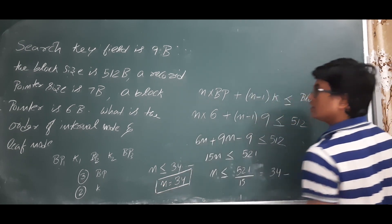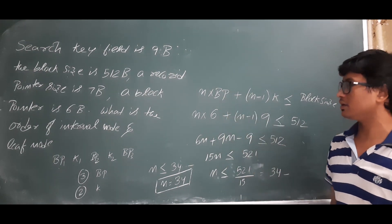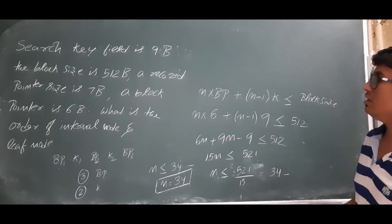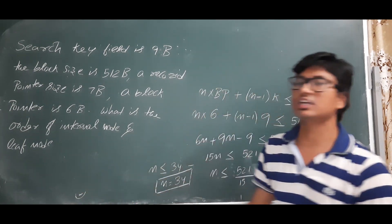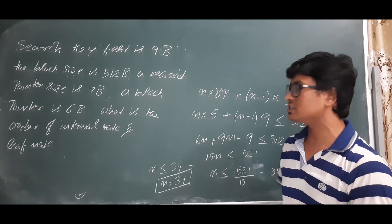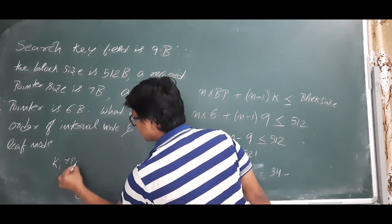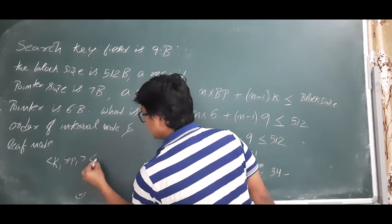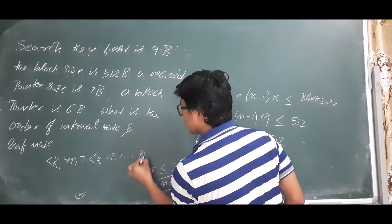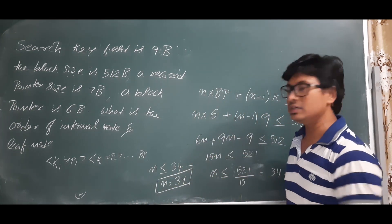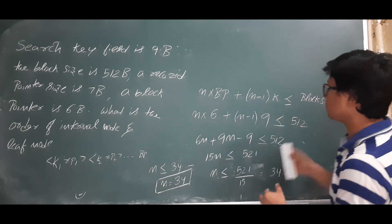So the order of the internal node is 34. Now we will find the order of the leaf node. To do that, I need to know the structure of the leaf node. The structure of the leaf node consists of key–record pointer pairs, and at the end there is one block pointer pointing to the sibling node.